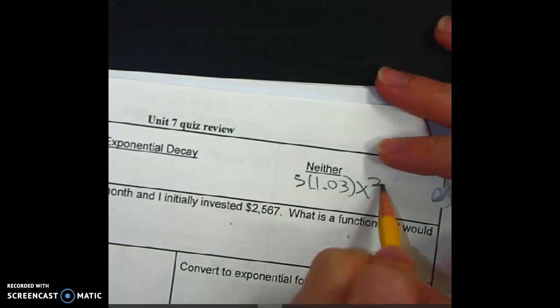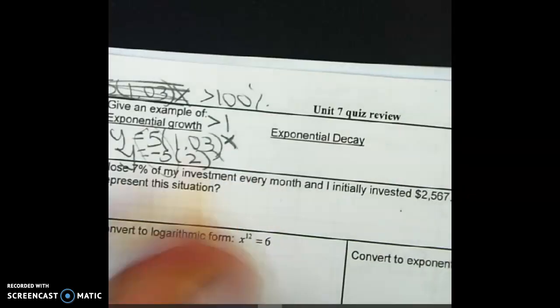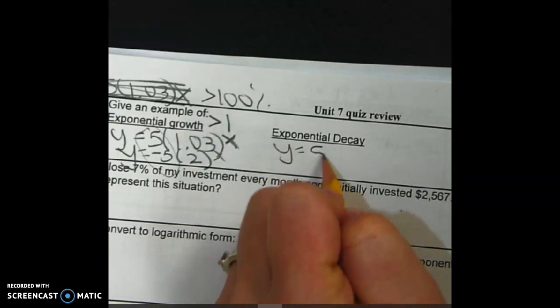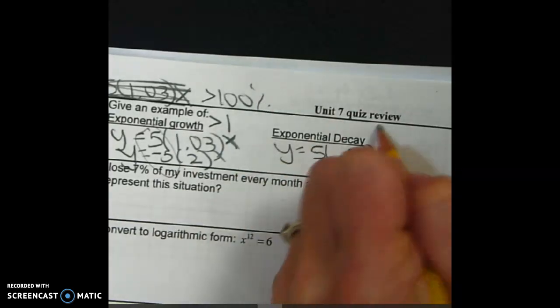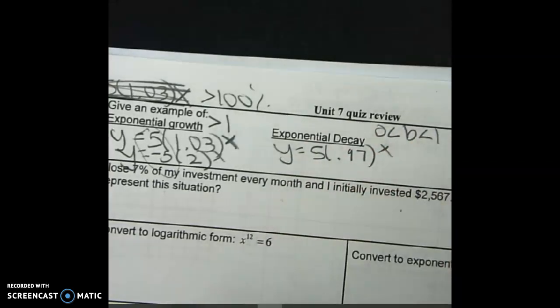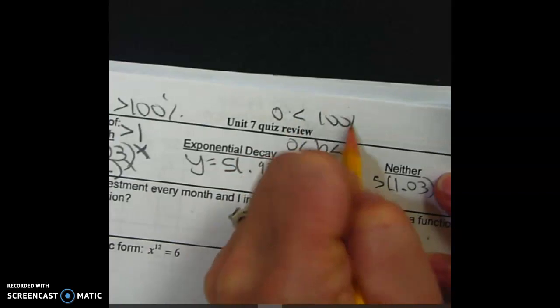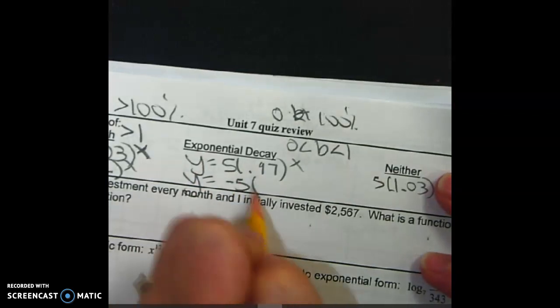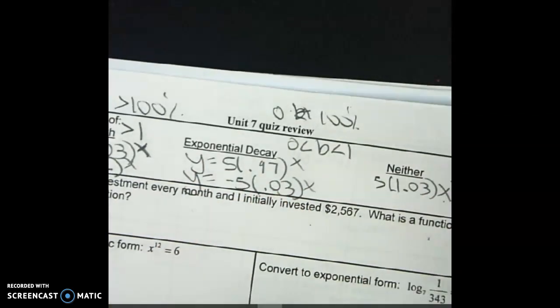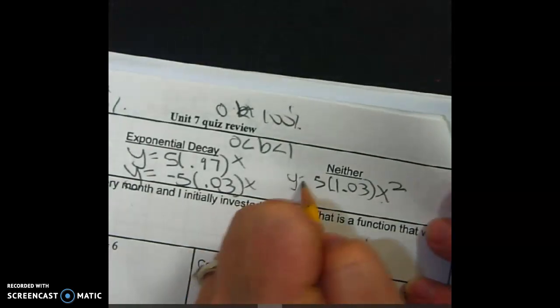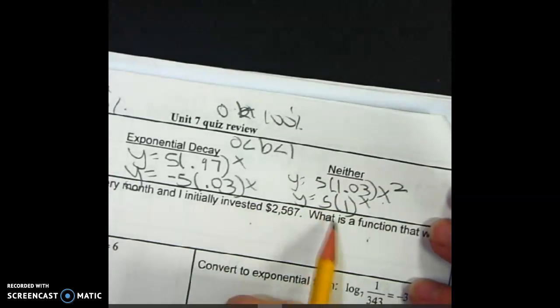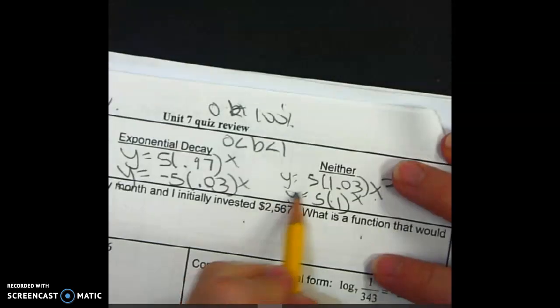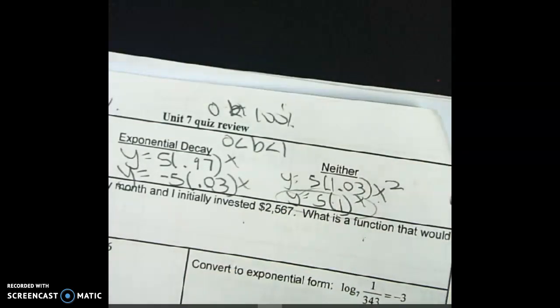So that would count in the neither category because it's not exponential at all. So since it's not an exponential, it doesn't matter if it's growth or decay. That also means if it says x squared, it's a neither. Okay, because it's not exponential. Exponential functions, this is quadratic, has the little x. The x is the exponent. Exponential decay. Y equals 5.97 to the x. It's got to be between 0 and 1, between 0 and 100%. Okay, whatever, between. Y equals negative 5.03 to the x.